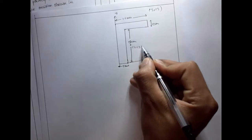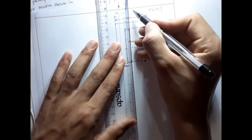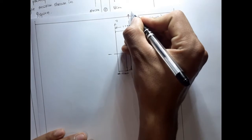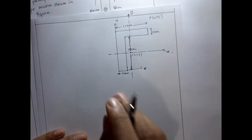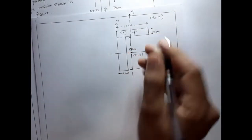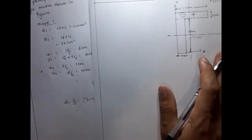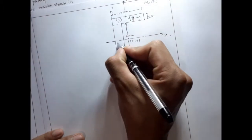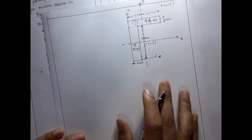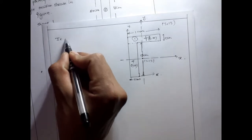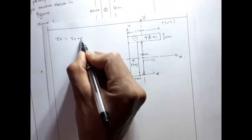Now we establish the central axis. The centroidal axis passes through (3, 13). For shape one, the distance from its centroid to the central x-axis is (19 − 13) = 6, and to the central y-axis is (6 − 3) = 3. For shape two, the distances are (9 − 13) = −4 and (1 − 3) = −2.